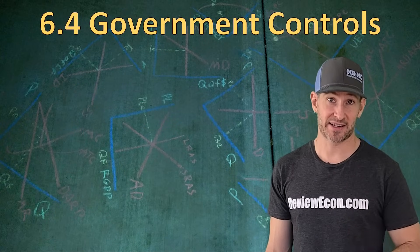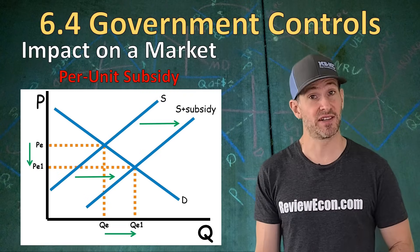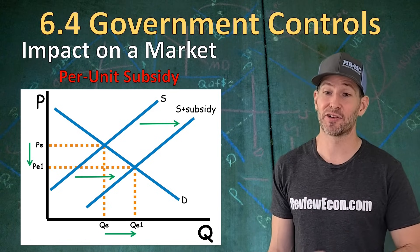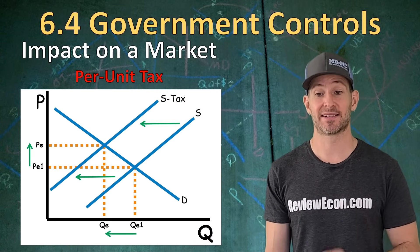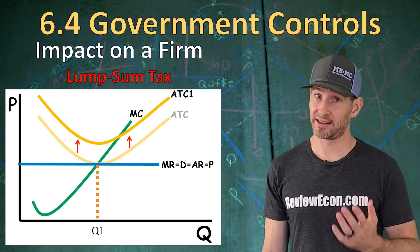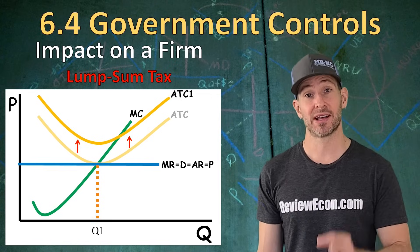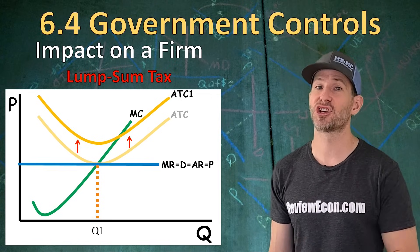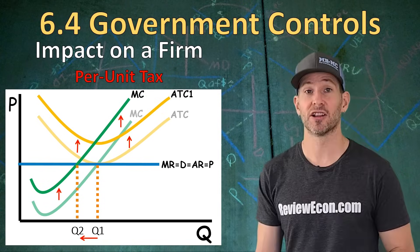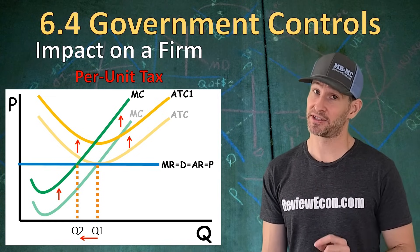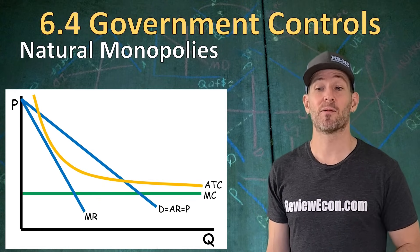The next topic is the impact of government controls. A subsidy shifts the supply curve to the right, driving down the price and increasing the equilibrium quantity. A per unit tax shifts the supply curve to the left, increasing the price and decreasing quantity of output. If the government imposes a lump sum tax — a flat amount for being a producer — that shifts the average total cost curve upward; it won't change the price or quantity in the short run. If the government imposes a per unit tax, that shifts the marginal cost upward along with average total cost, and we see a reduction in quantity produced.